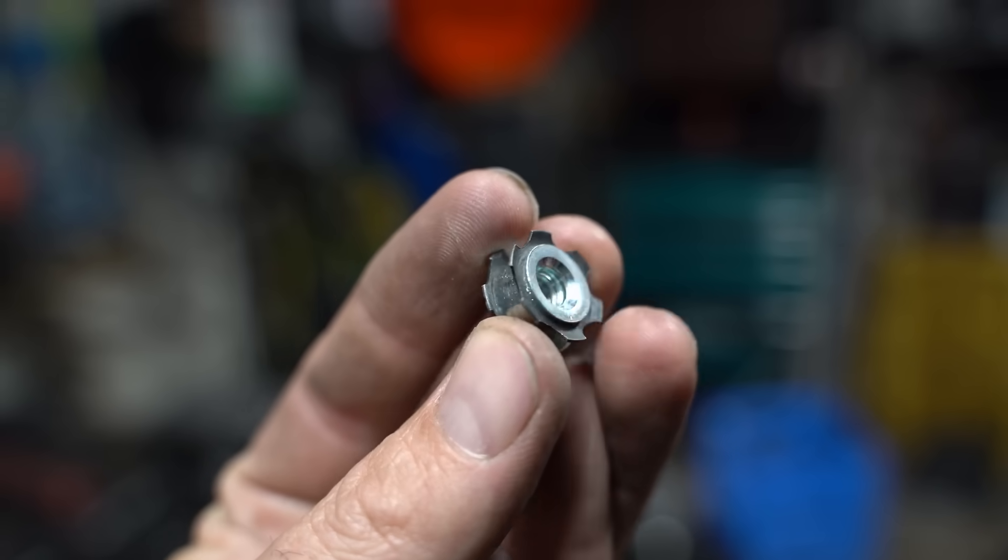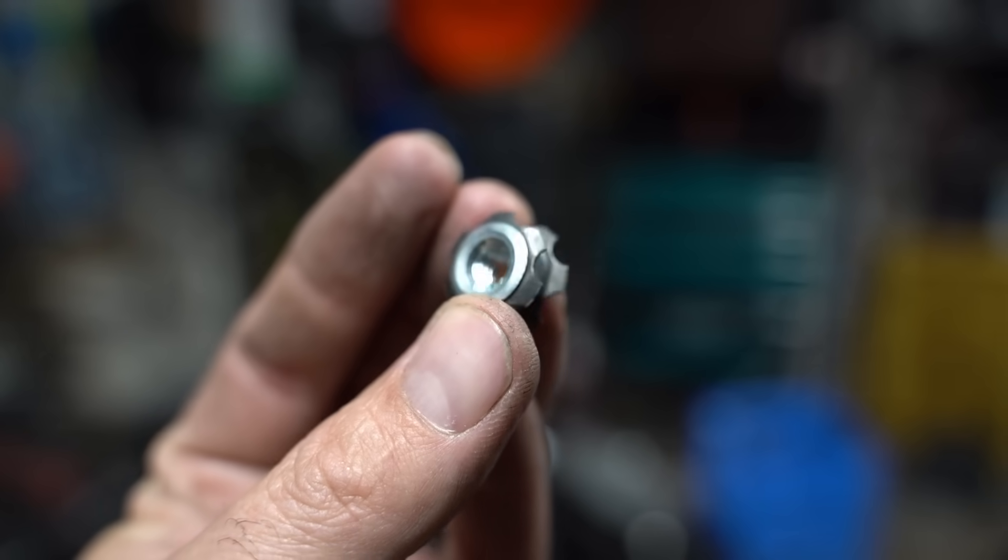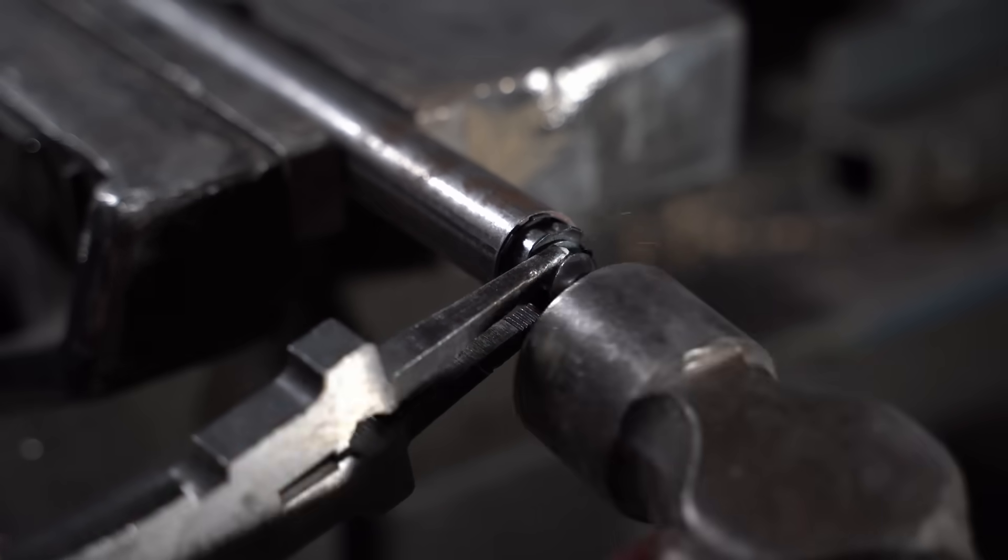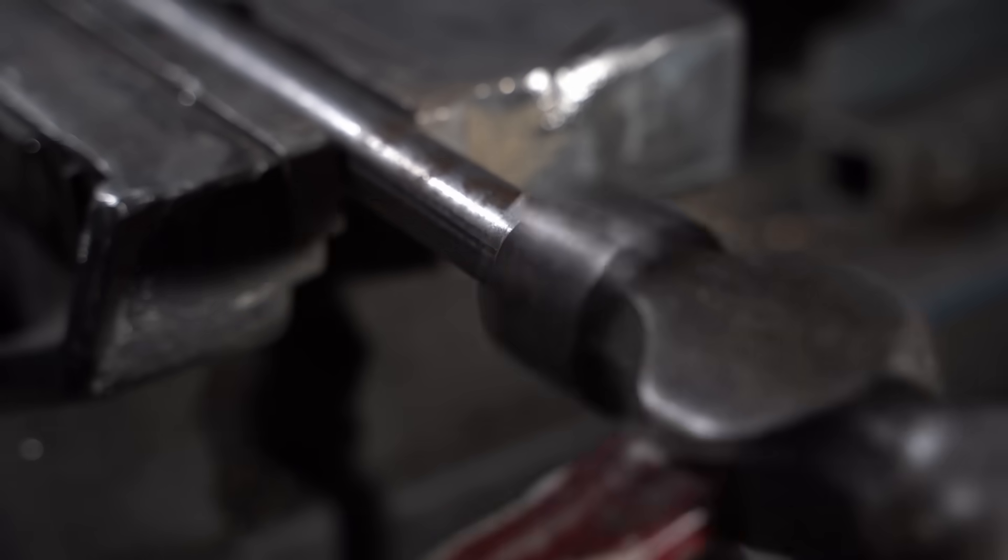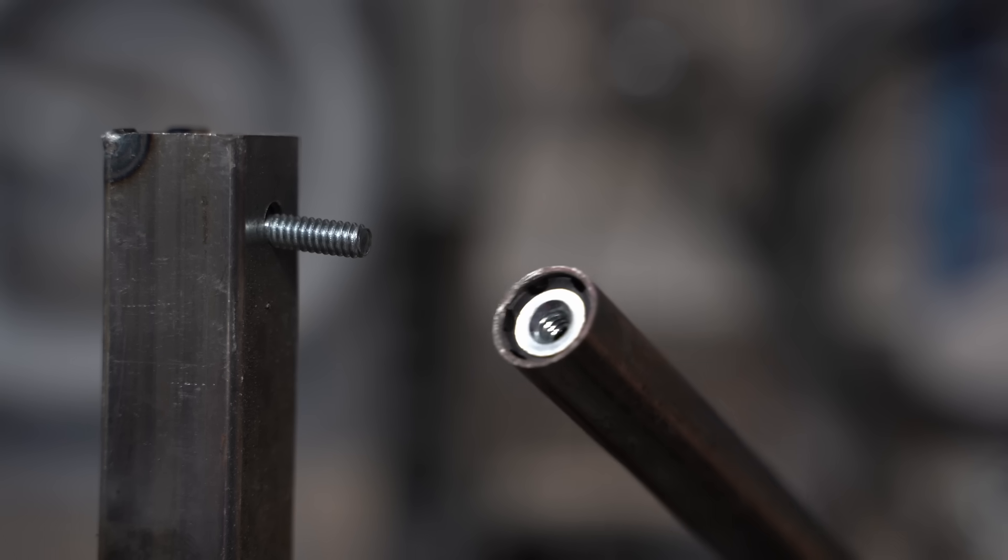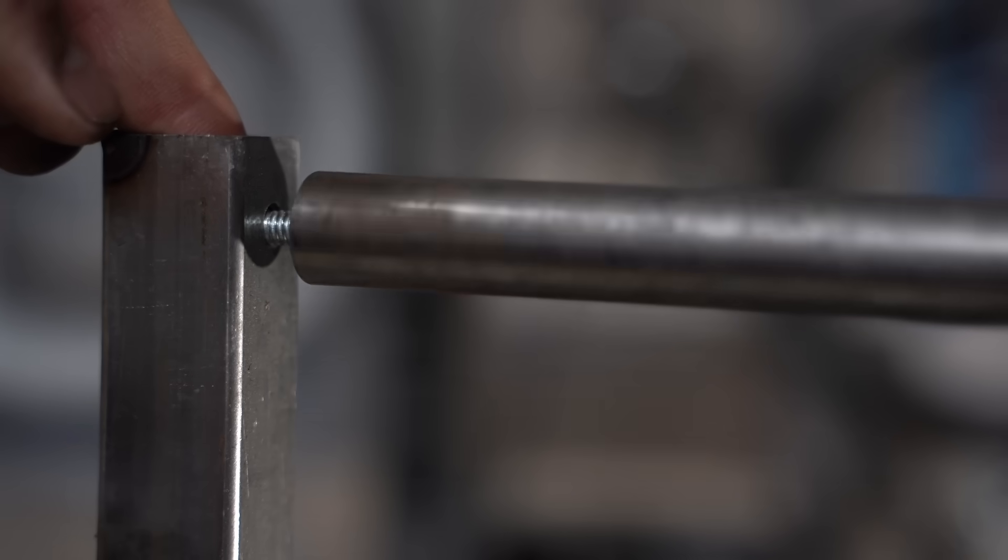I found this in the hardware store, and it took a little while to figure out what it was for. If you hammer this thing into the end of a piece of tubing, it locks into place and allows you to make crossbars for something that needs crossbars.